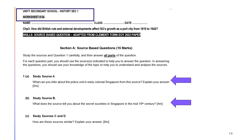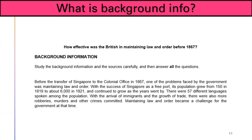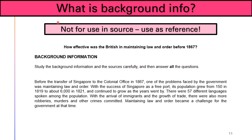For the next step, we are going to look at Worksheet 5A and go back to inference. When you get a particular question, you will also get something called background information. Background information is basically things that tell a little bit about the source. However, I want you to remember that background information is not to be used directly in a source answer — it is used as reference, just to help you understand the sources better.